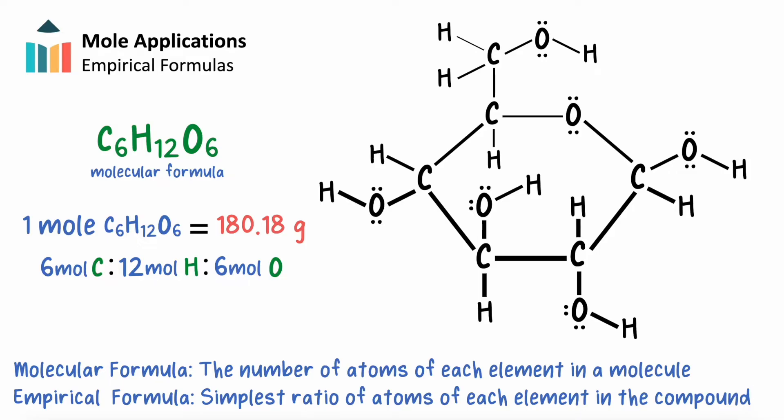In the case of glucose, the 6 to 12 to 6 ratio simplifies to 1 to 2 to 1.